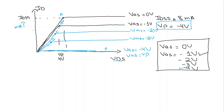So this is our output characteristic graph. The IDSS was 8 milliampere. The level of VGS that results in ID equal to 0 milliampere is defined by VGS equal to Vp, where Vp is a negative voltage for N-channel devices and a positive voltage for P-channel junction field effect transistors.